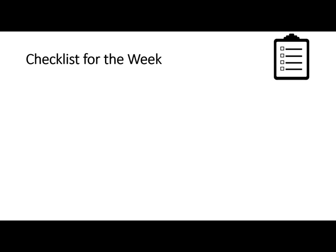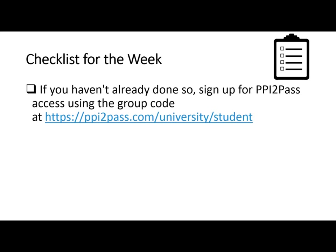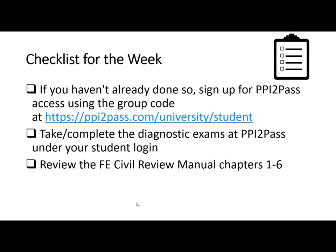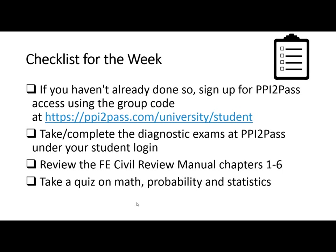If you bring questions we'll probably record that session and post it. So if you have questions on math, probability, or statistics — review it, take a quiz, come Thursday and get your questions answered. Here's the checklist for the week: sign up for student access using the group code SUNYSP19 (all caps); take and complete the diagnostic exams if you haven't; review chapters one through six of the review manual; and take a quiz on math, probability, and statistics, ideally getting 50% correct. Hopefully that's what you can get done. Best of luck with your studying this week — shoot me an email if you have questions!